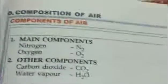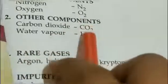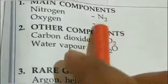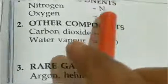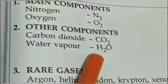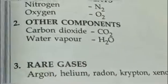The main components of air are nitrogen and oxygen, and other components are carbon dioxide and water vapor. Here I have represented the molecular formulas. N2 is written because nitrogen exists as a molecule, oxygen also as a molecule.